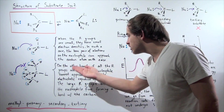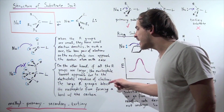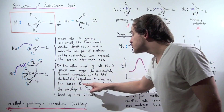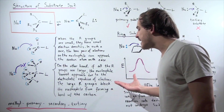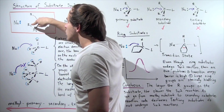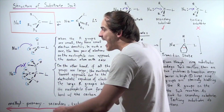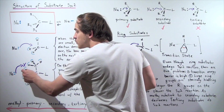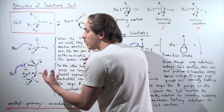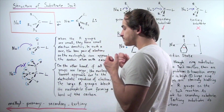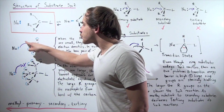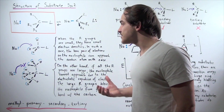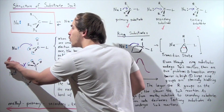If all the R groups are large, the nucleophile cannot approach due to the electrostatic repulsion of electrons bound on these H atoms. The large R groups block the nucleophile from forming a bond with the carbon. We see that the smaller these groups are, the higher our reaction rate is. The larger these groups are, the lower our reaction rate is. If these groups are small, this will quickly be able to get to the carbon.